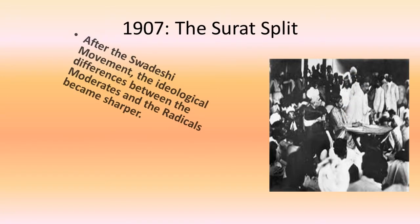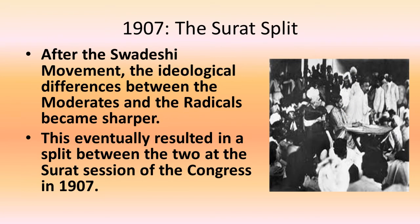Next, we will discuss about the Surat Split. The Indian National Congress Party divided into two groups at the Surat Session in 1907 because they had different ideologies. So they divided into two groups, namely the moderates and the radicals, which we have already studied about.